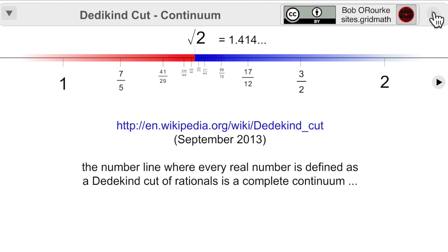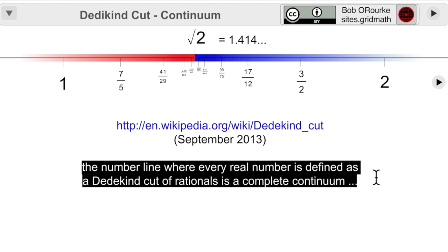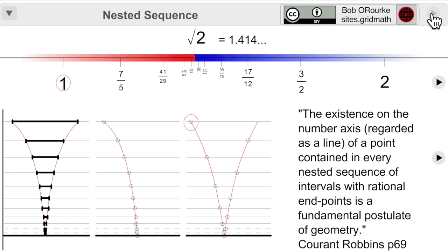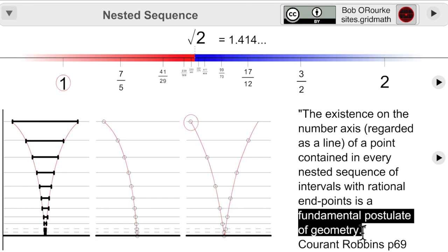The common approach today is that the real number line is a complete continuum. Here, an infinite irrational number is approached by a continued fraction. And with this imagery from Courant-Robbins, I combine that same continued fraction with the nested sequence method of approaching a point.